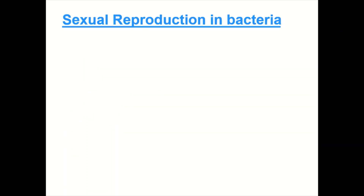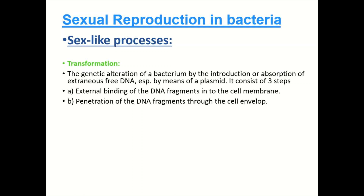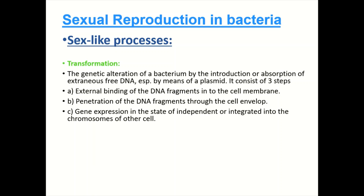Sexual reproduction in bacteria involves sex-like genetic processes where the exchange of genetic material takes place. Number one is transformation. In transformation, genetic alteration of bacteria occurs by the introduction of exogenous or extraneous free DNA, especially by means of a plasmid. It consists of three steps: external binding of DNA fragments into the cell membrane, penetration of DNA fragments through the cell envelope, and gene expression either independently or integrated into the chromosomes.